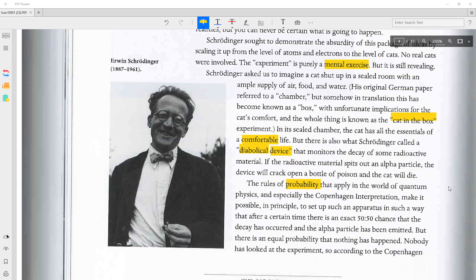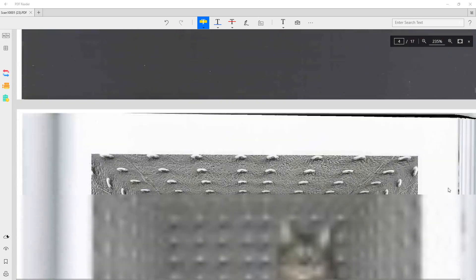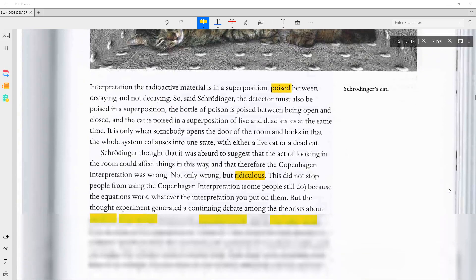The rules of probability that apply in the world of quantum physics and especially the Copenhagen interpretation make it possible in principle to set up such an apparatus in such a way that after a certain time there is an exact 50-50 chance that the decay has occurred and the alpha particle has been emitted. But there is an equal probability that nothing has happened. Nobody has looked at the experiment. So according to the Copenhagen interpretation,